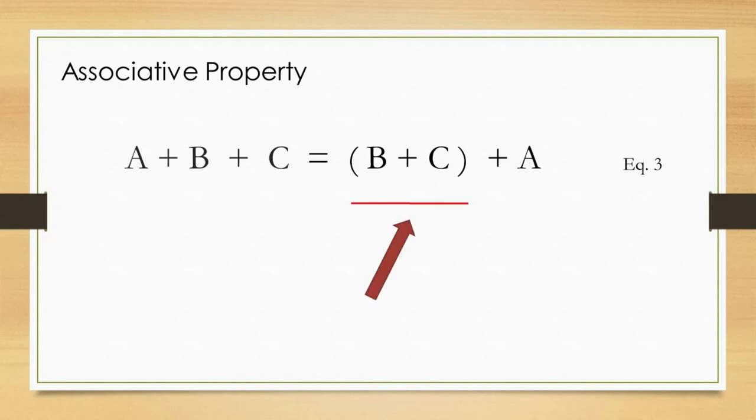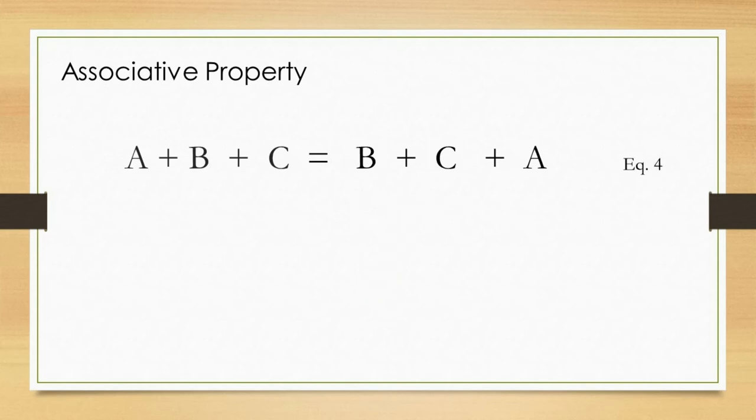Let us focus on the right arm of the equation. The operation inside the bracket must be prioritized. However, since the bracket is located in the most left of the arm, the bracket can be eliminated, as it did not change the order of operation. This gives us equation 4, as shown in this slide.